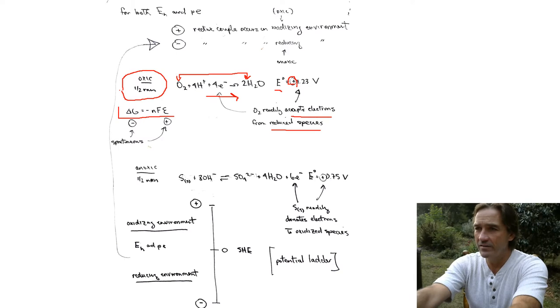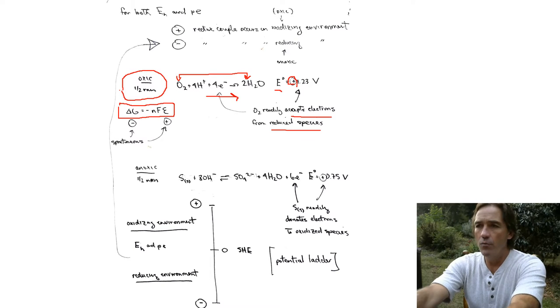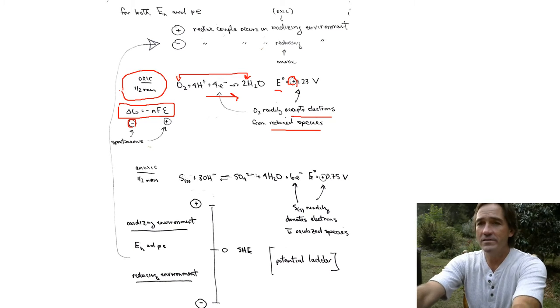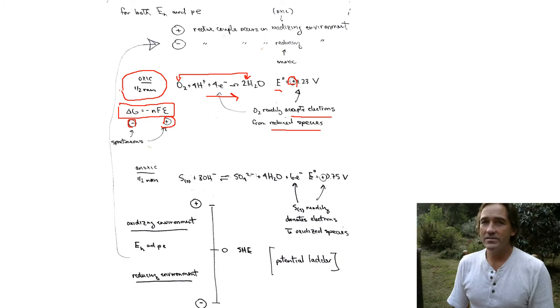That's due to the fact that delta G equals negative NFE. We know that if delta G is negative, we have a spontaneous reaction, meaning it will happen all by itself. If we have a voltage that's positive, that means that the reaction will occur.